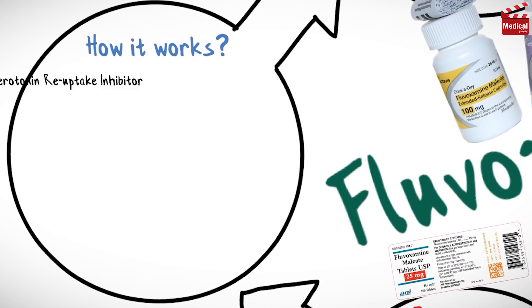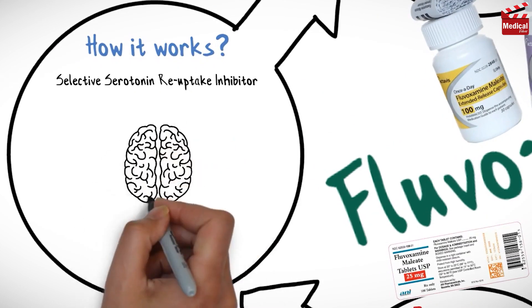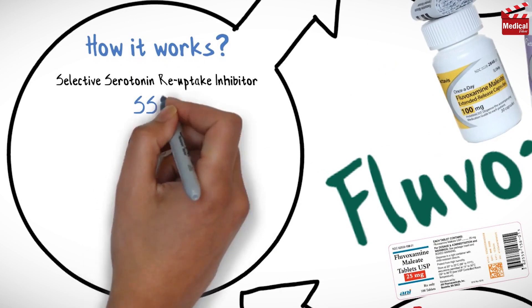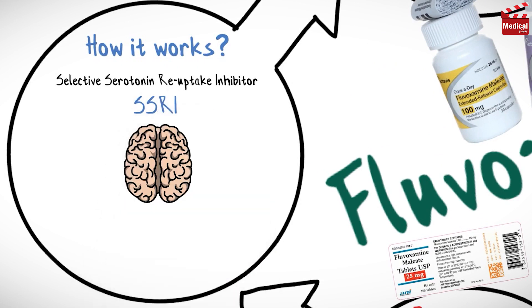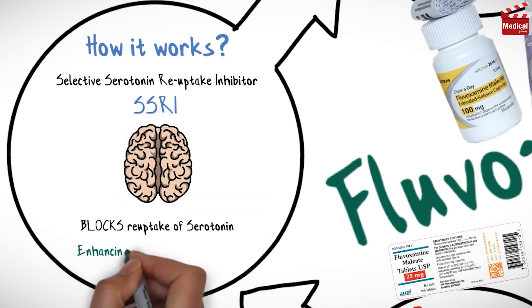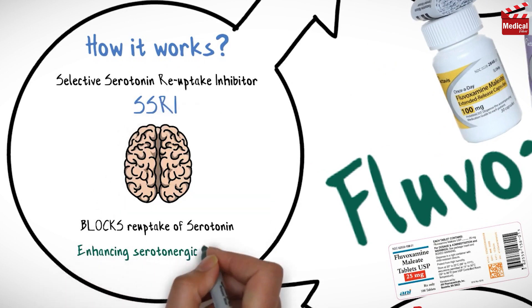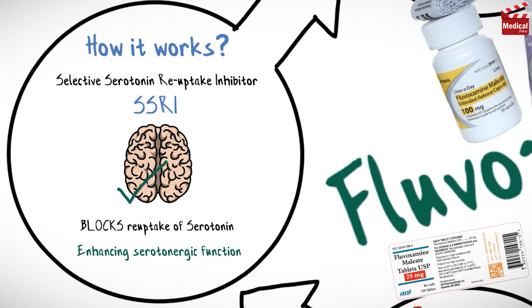Fluvoxamine is a selective serotonin reuptake inhibitor. It blocks the reuptake of serotonin, enhancing serotonergic function in the brain.